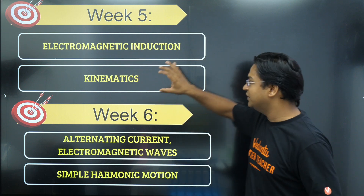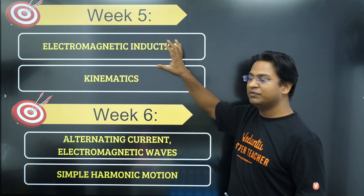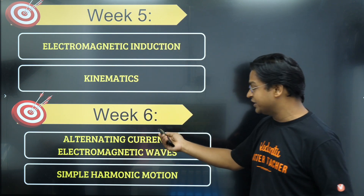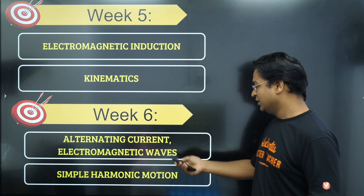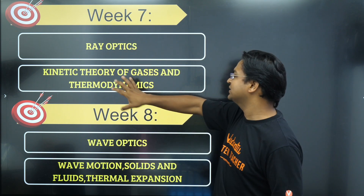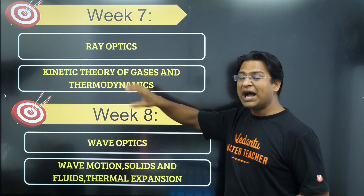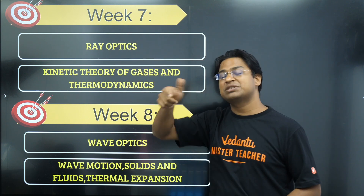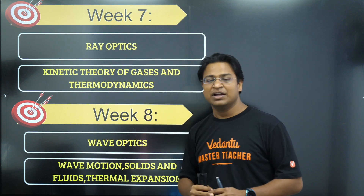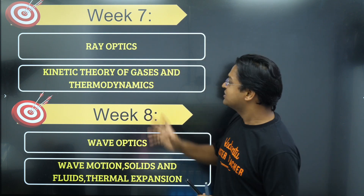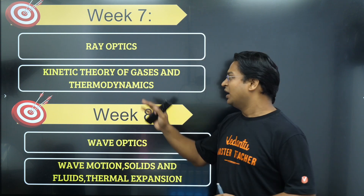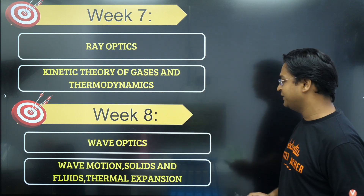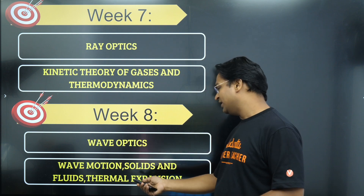In Week 5 we cover Electromagnetic Induction along with Kinematics, since kinematics plays a significant role in EMI problems. In Week 6, we cover Alternating Currents paired with Simple Harmonic Motion, as they are very similar to each other. In Week 7, Ray Optics and Kinetic Theory of Gases are covered together — both are fairly independent chapters where problems are framed on a standalone basis without mixing concepts from other chapters.